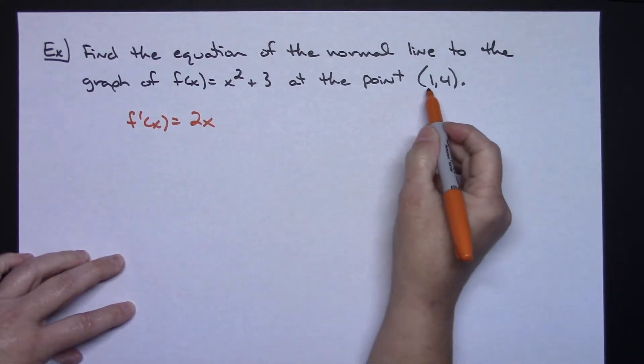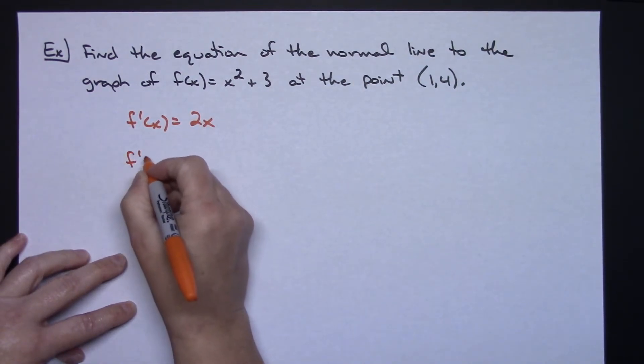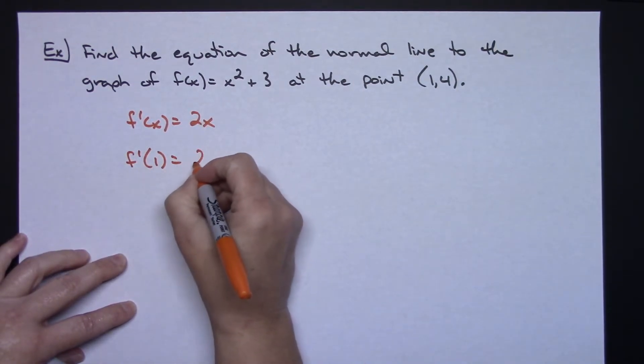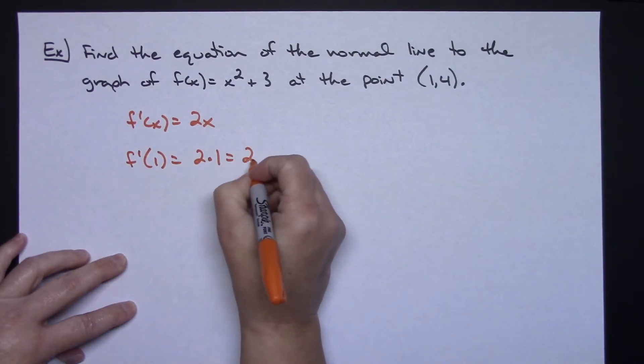Now I want it at the point (1,4), so I'm going to plug 1 into my derivative. So that would be 2 times 1, or 2.